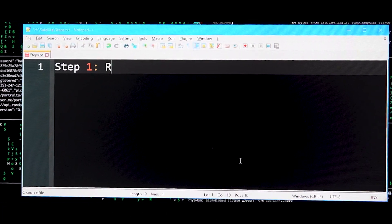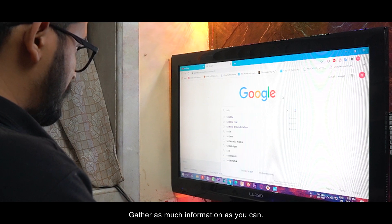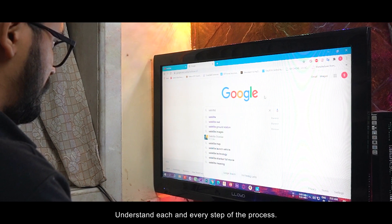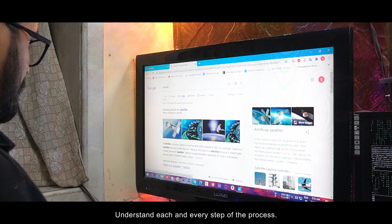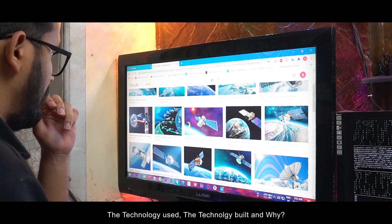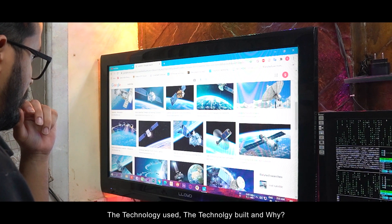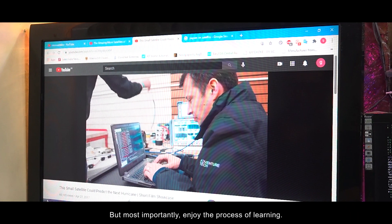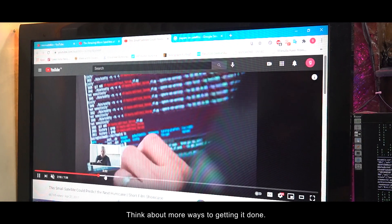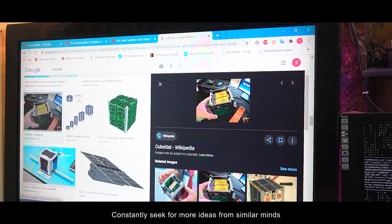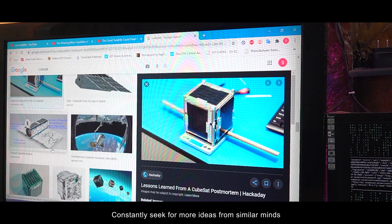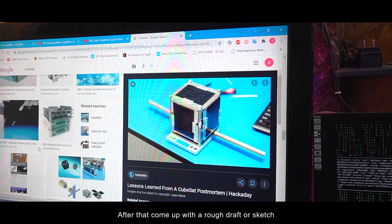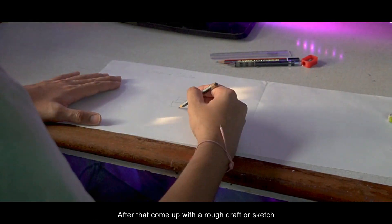Step 1: Research. Gather as much information as you can. Understand each and every step of the process, the technology used, the technology built and why. But most importantly enjoy the process of learning. Think about more ways to getting it done. Constantly seek for more ideas from similar minds. After that come up with a rough draft or sketch.